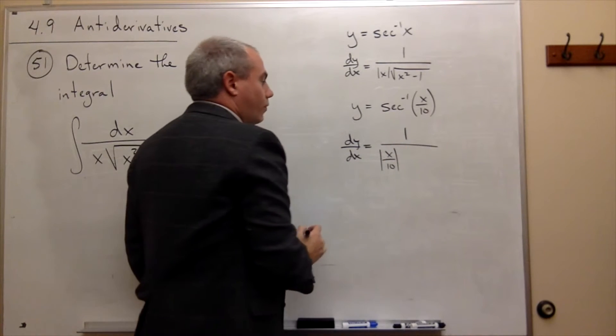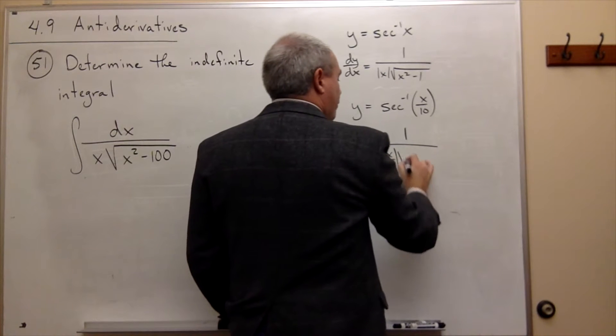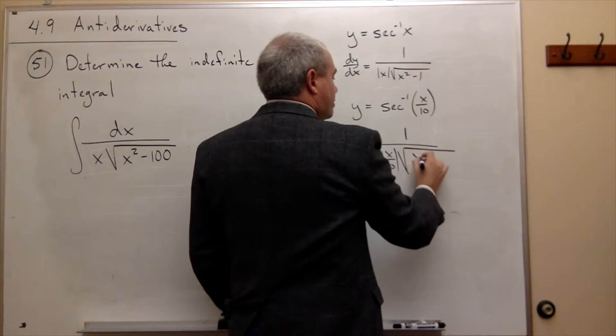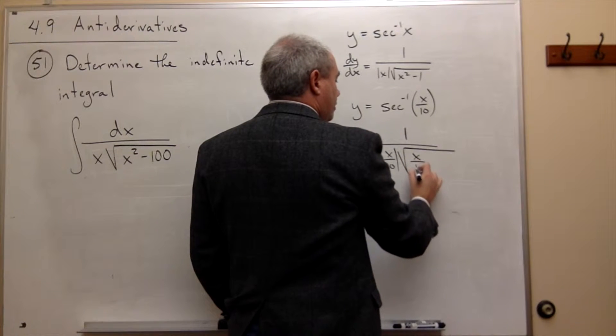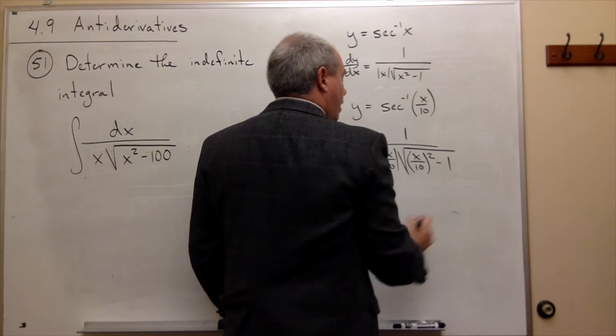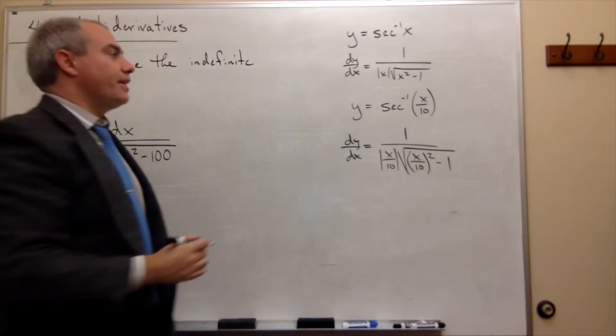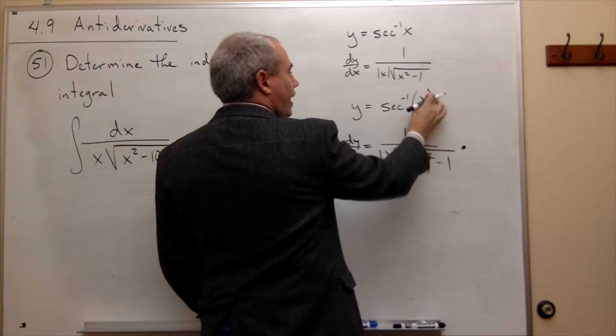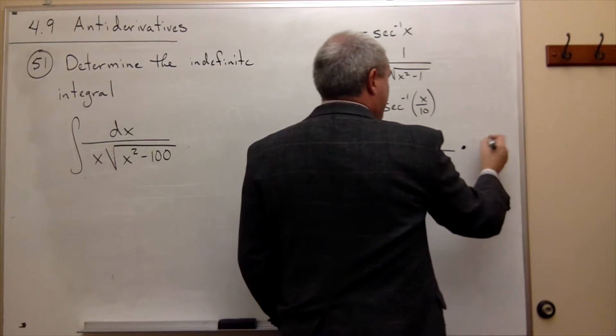We could take absolute value if we want, times the square root of (x over 10) squared minus 1. But then I need to multiply that by the derivative of x over 10, which is 1/10.